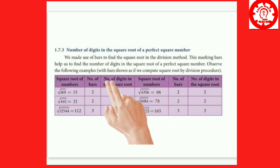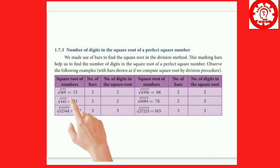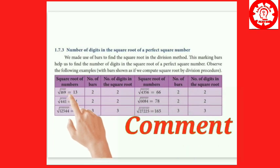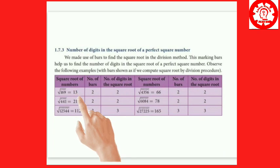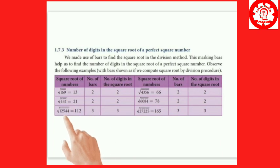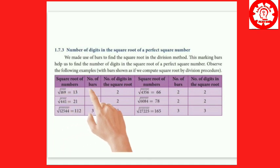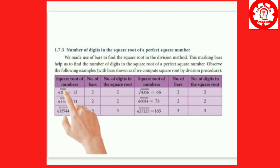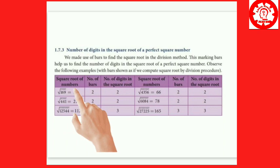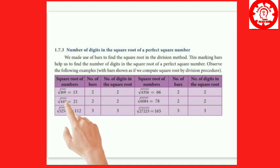Let's look at the square root of some numbers. The square root of 169 is 13. The square root of 441 is 21. The square root of 12544 is 112. If you find the square root using bars: 169 has 1 bar — root has 2 digits. 441 has 2 bars. 12544 has 2 bars.